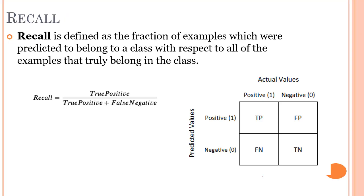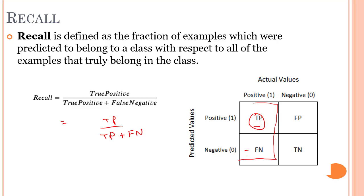The next metric is recall. Recall is the ability of a model to find all the relevant cases within a dataset. The precise definition of recall is the number of true positives divided by true positive plus false negative. It is the fraction of examples which truly belong to a class that were correctly predicted.